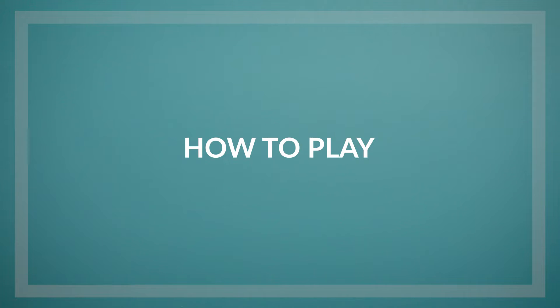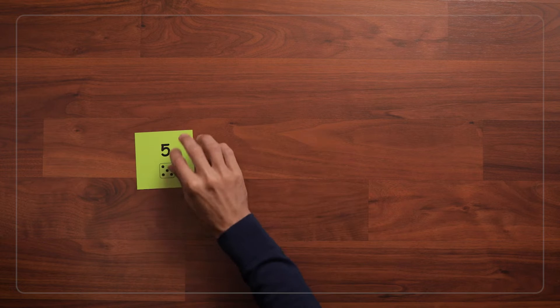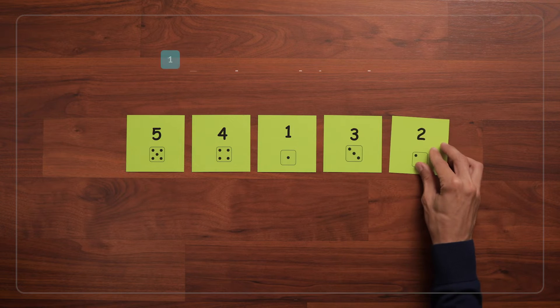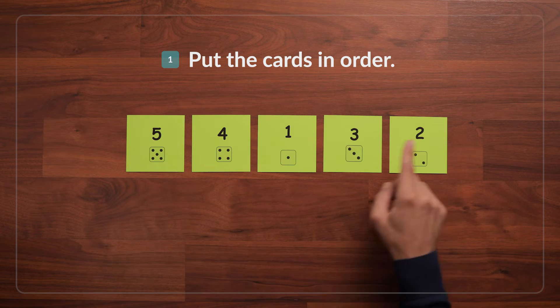The first thing to do is to shuffle the cards and lay them out on the table. Then ask the children to put the cards in order from least to greatest.